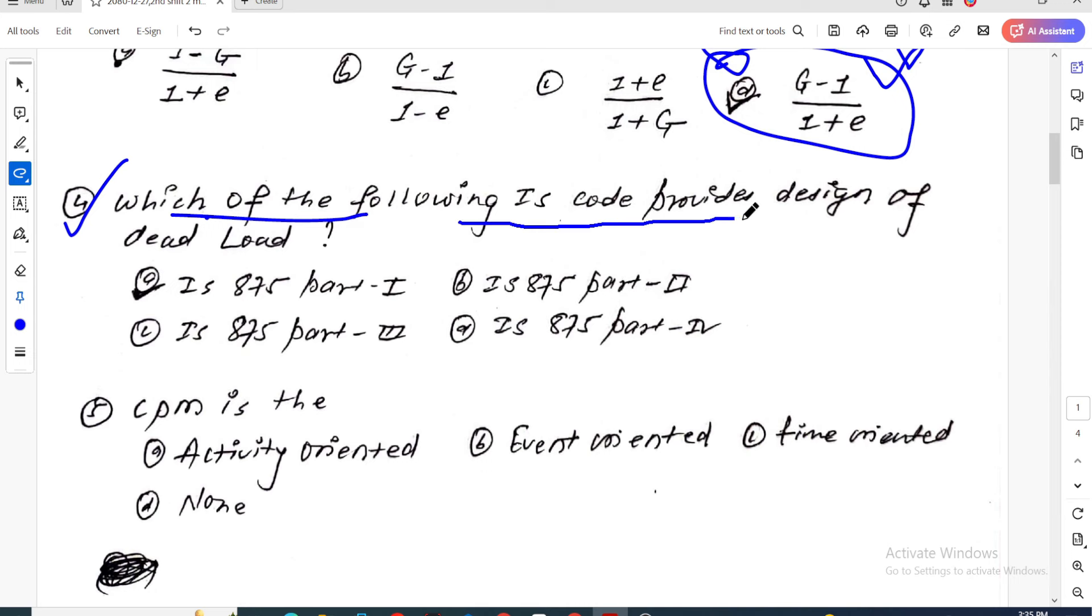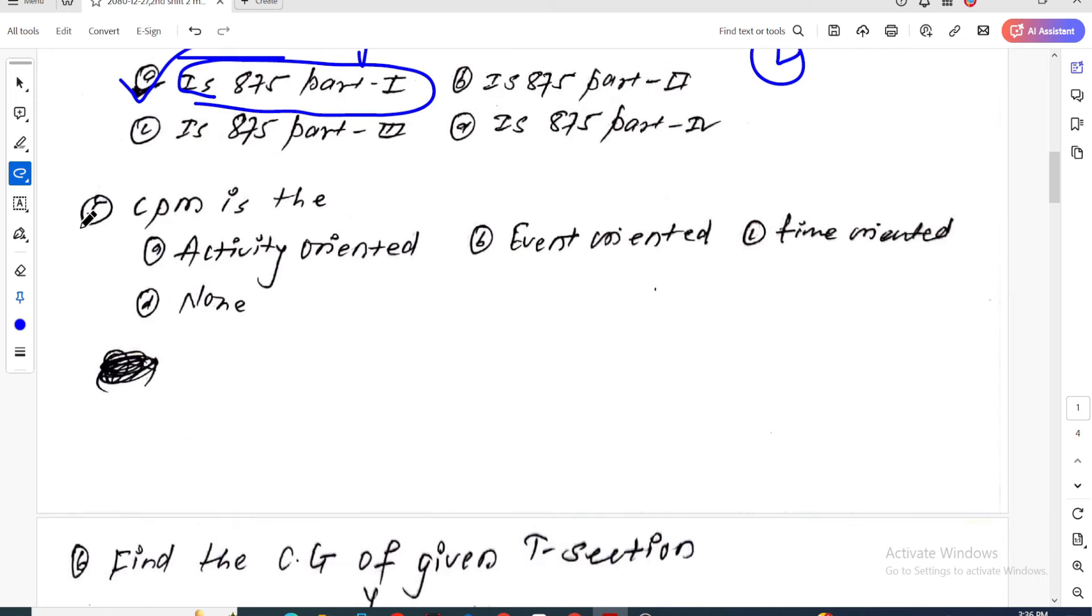Question four: Which IS code provides the design of dead load? The answer is IS 875 part 1 for dead load design. Part 2 is for imposed load, part 3 for wind load, and part 4 for snow load.